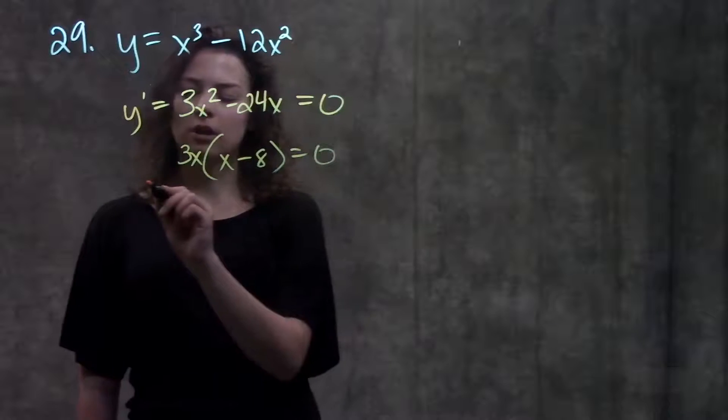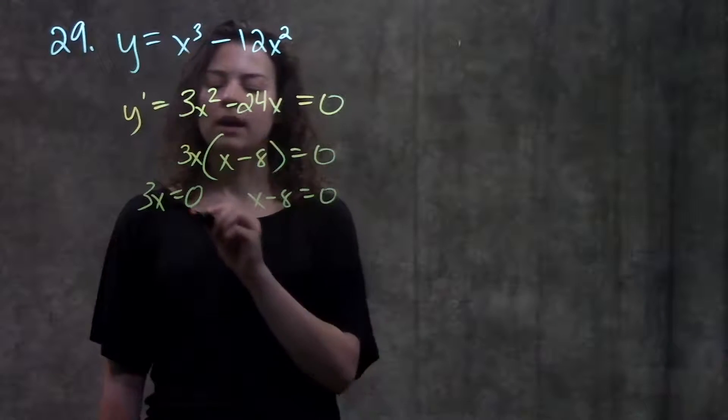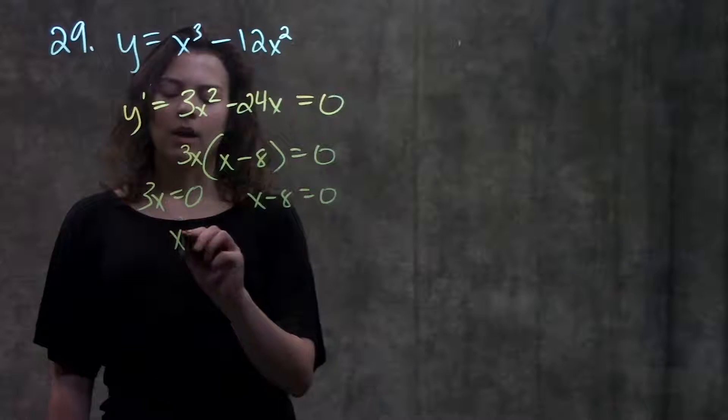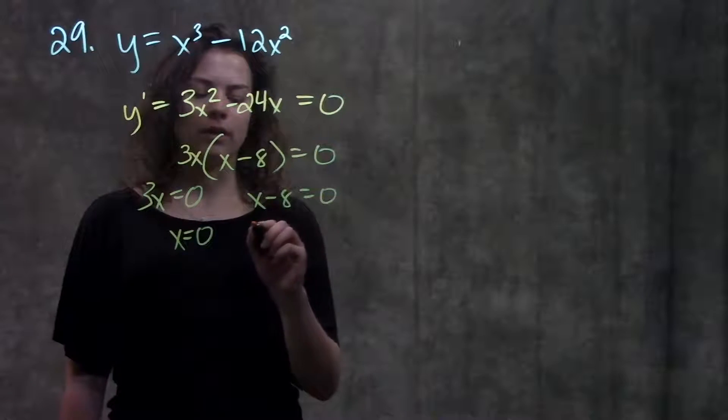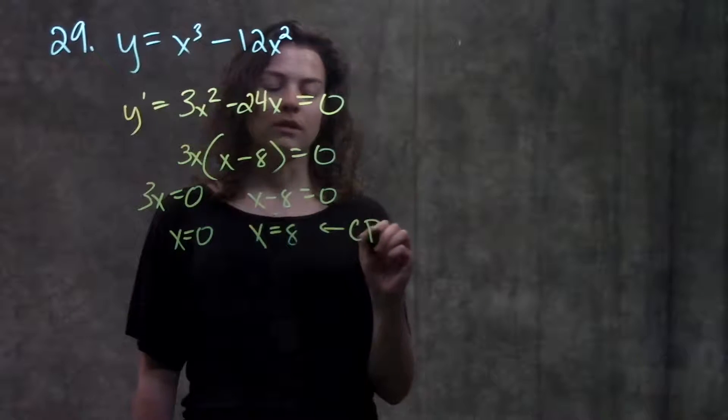Now I set both of these terms equal to 0. 3x equals 0, x minus 8 equals 0, and solve for x. Here I get x equals 0, and here I get x equals positive 8. These two values are my critical points.